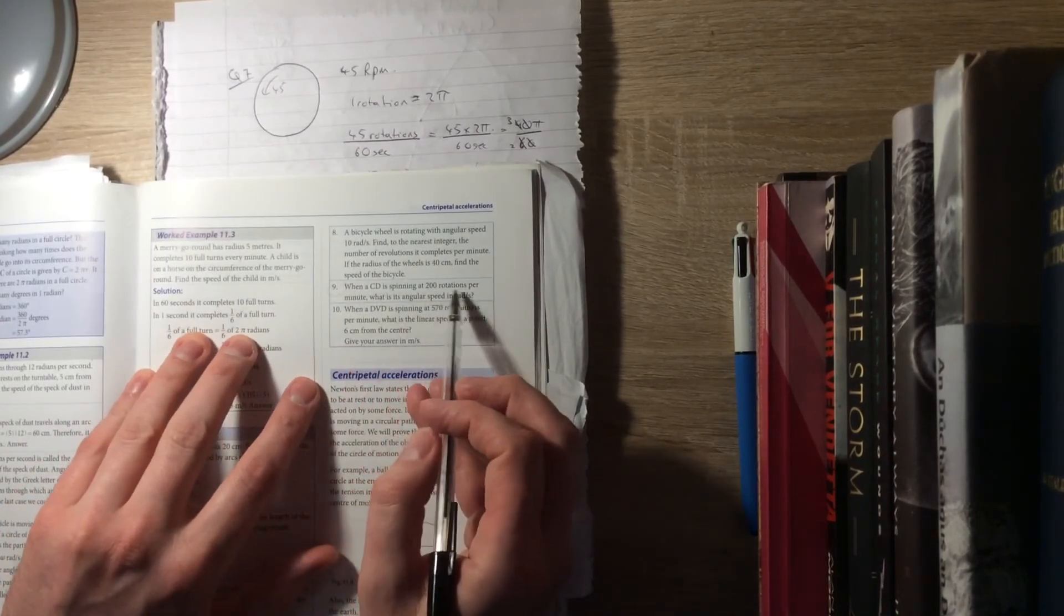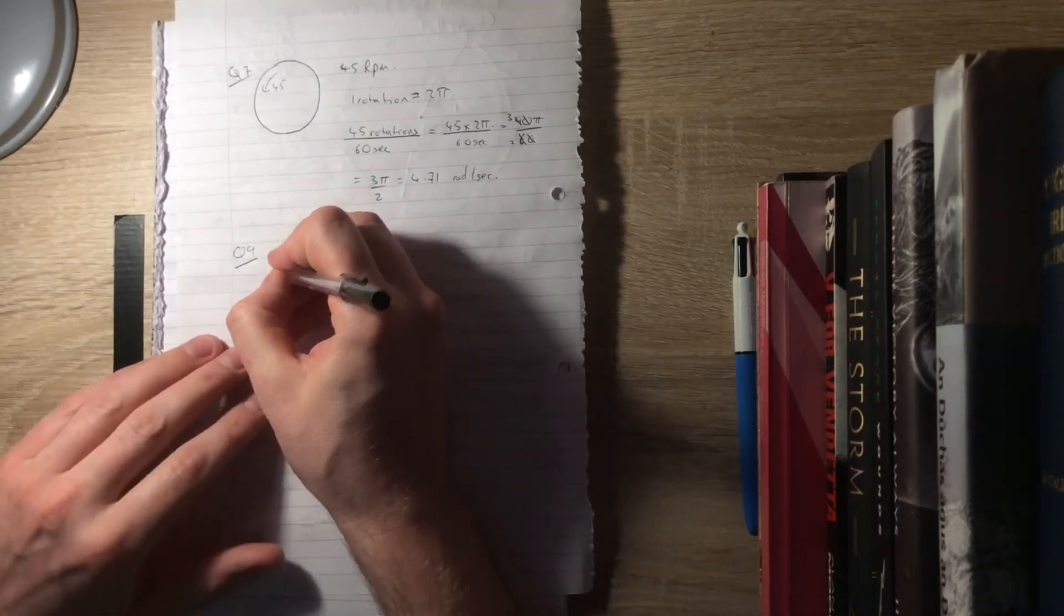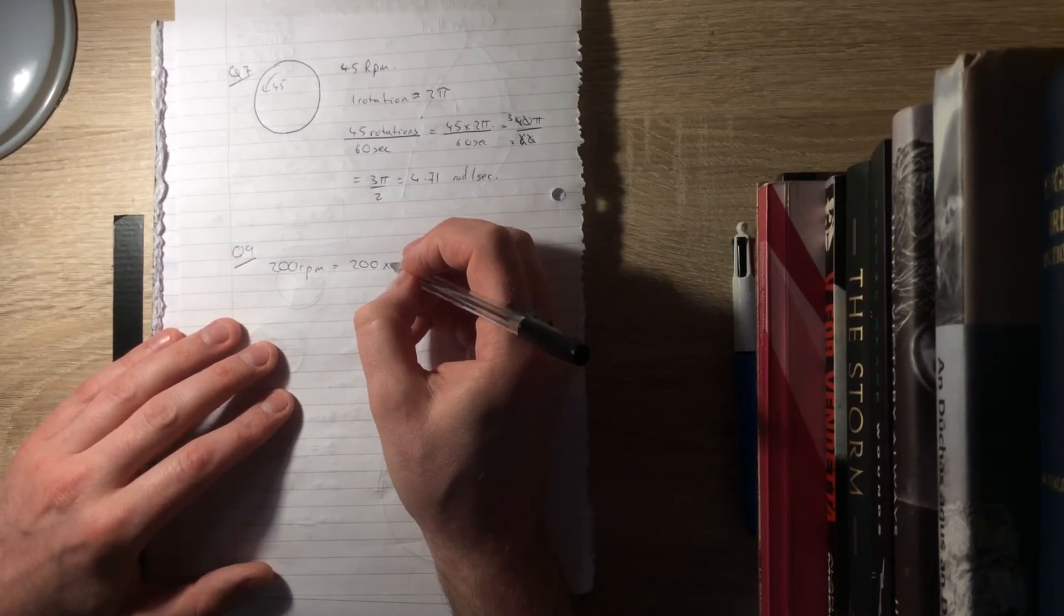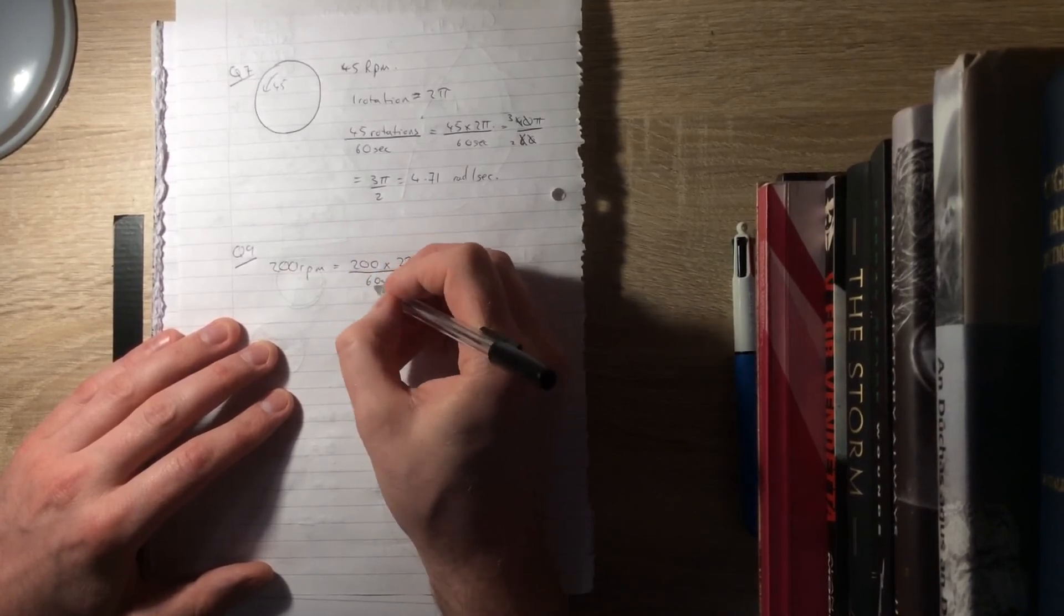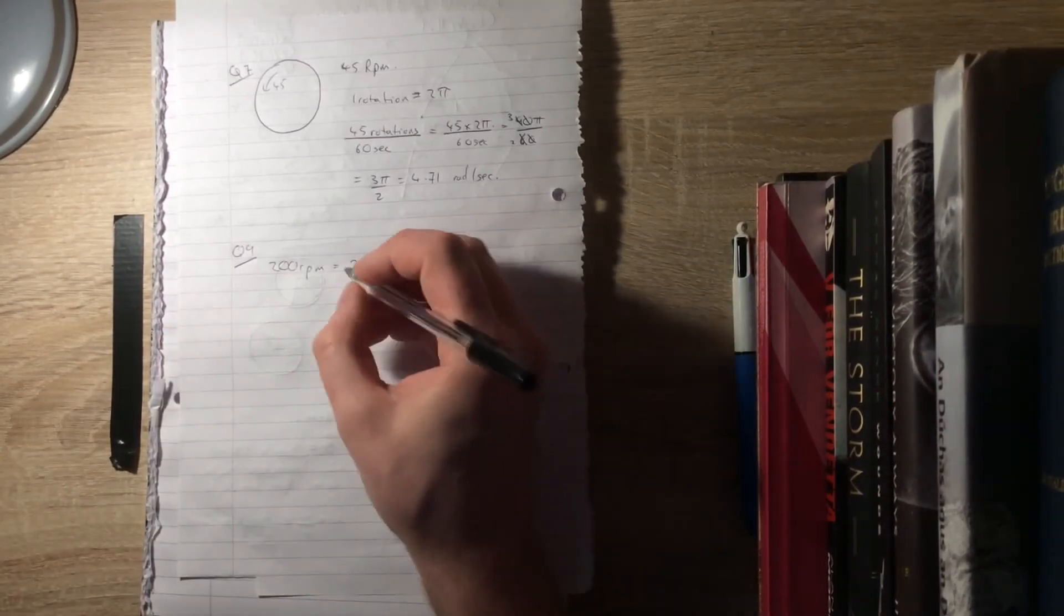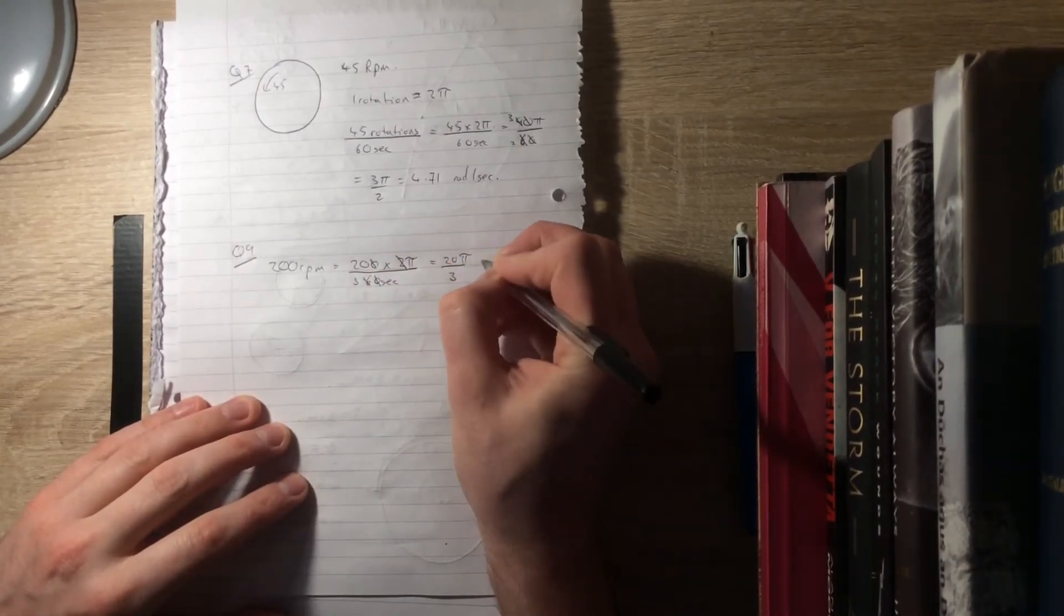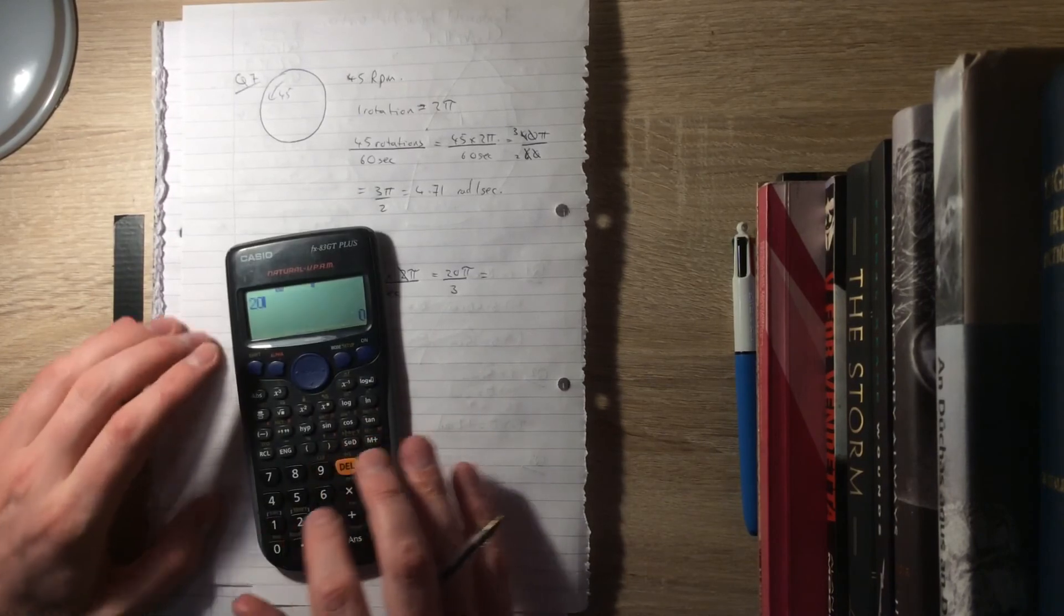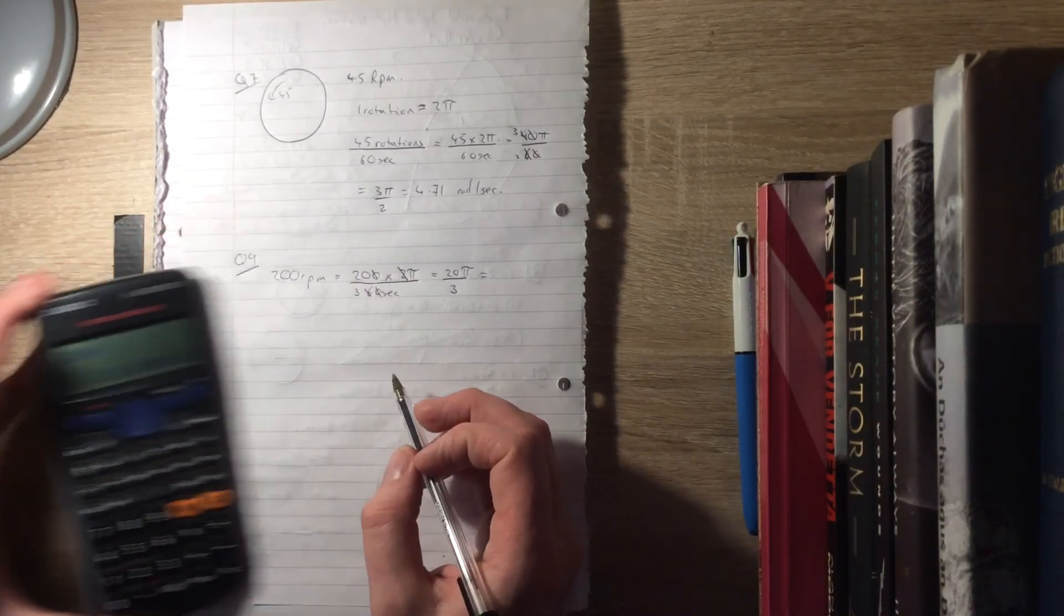The last question, question 9, is similar enough. A CD is spinning at 200 rotations per minute. What is its angular speed in radians per second? Again, 200 rotations is the same as 200 multiplied by 2π, and every minute is every 60 seconds. That's going to leave us with 20π over 3, which equals 20.94 radians per second. So a lot faster than your record.